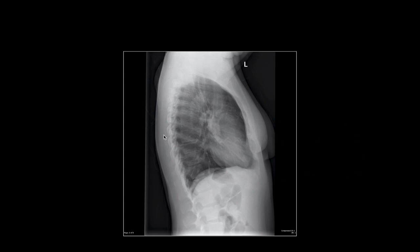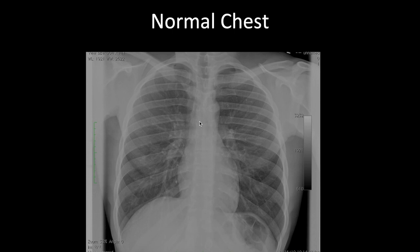In an AP projection, the cassette is at the back, so the heart is further from the cassette — introducing automatic magnification. Also, when you ask the patient to take a maximal inspiration and hold it, that retrocardiac space increases, but patients can't reproduce this exactly each time. So the magnification varies from film to film, making the AP projection unreliable for evaluating heart size.